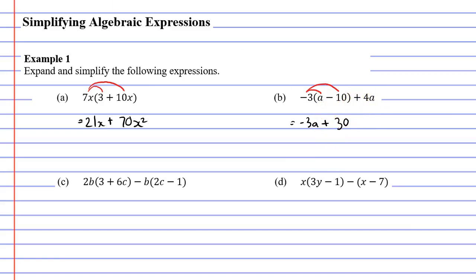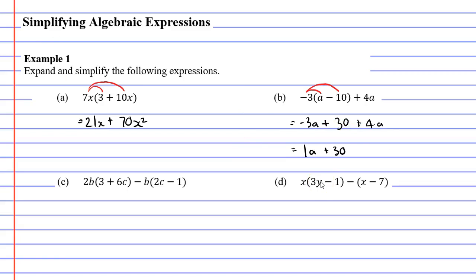We had plus 4A at the end, so we're just going to copy that down — plus 4A. So we've expanded our expression, and we also need to check if we can simplify anything. We can, because negative 3A plus 4A can be simplified. If I have negative 3A's and add another 4A's, I end up with just 1A. We've got our plus 30, so I'll write that to the right — plus 30. And I'm going to rewrite it as A plus 30, because I don't like to have a 1 in front of my A.